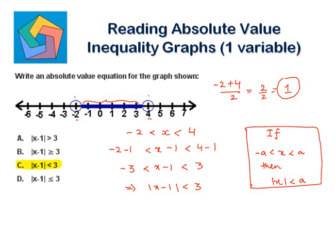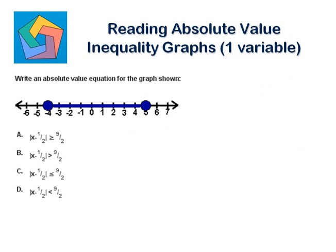Next problem: write an absolute value equation for the graph shown. Here the extreme values are negative 4 and 5, and the circles are filled. That means negative 4 is less than or equal to x, less than or equal to 5. Take the median of these two: negative 4 plus 5 divided by 2, which is 1 by 2.